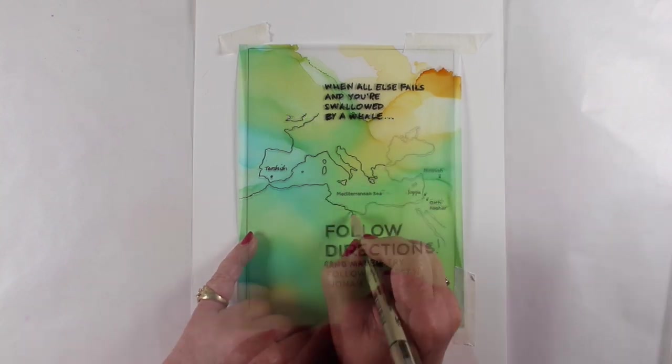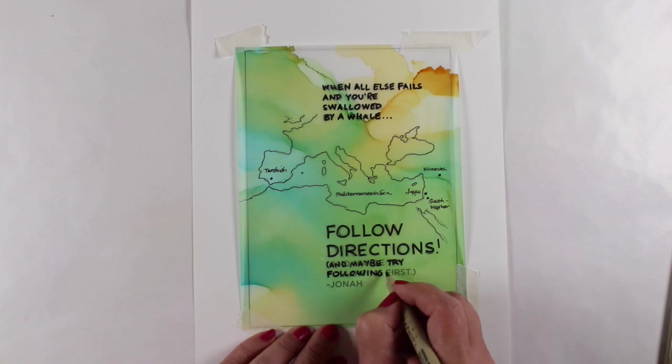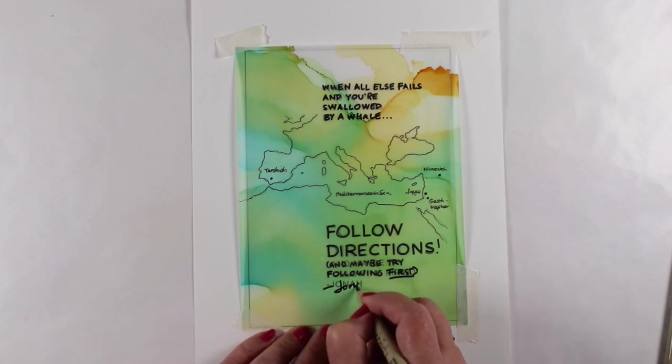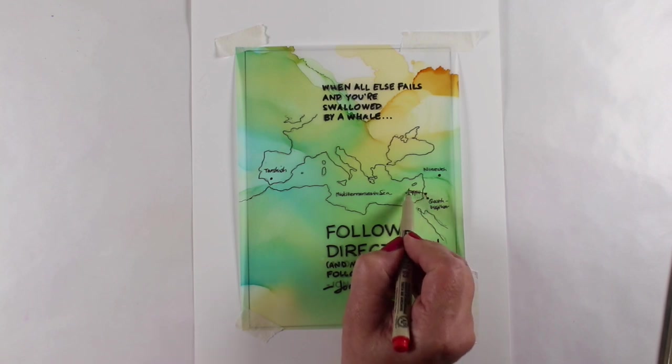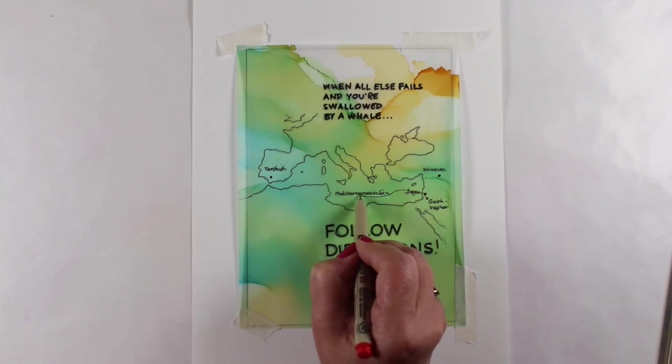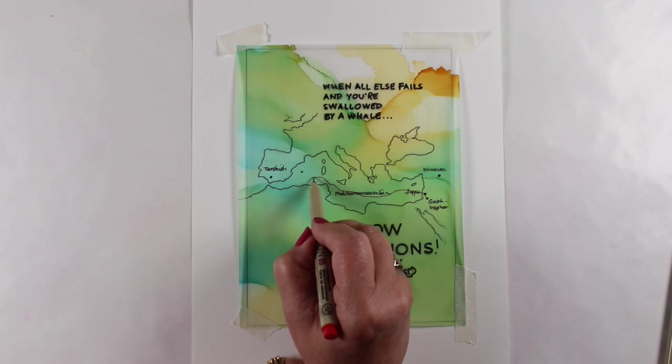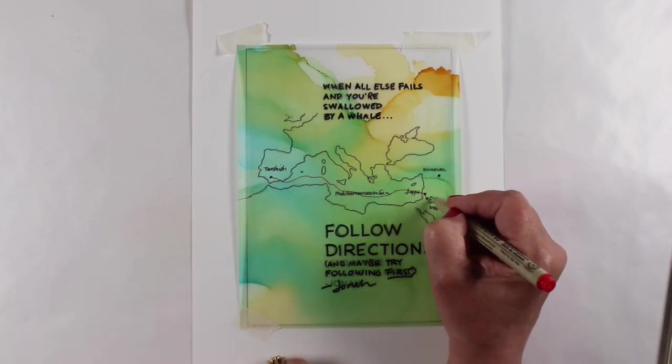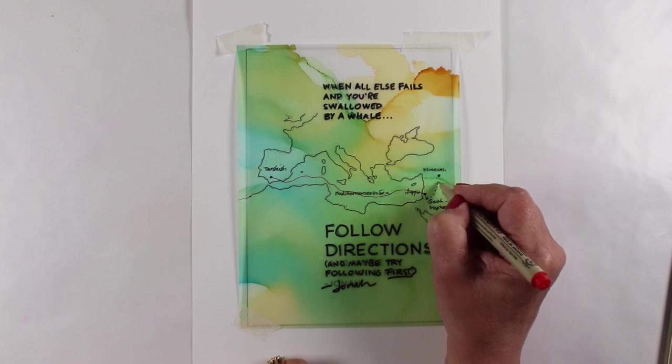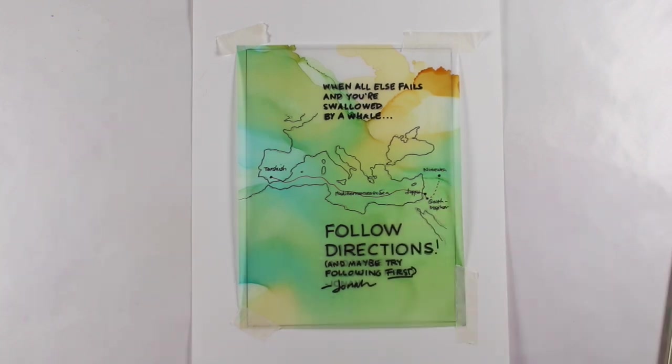And it's basically some words and a map. And it says on it, when all else fails, and you've been swallowed by a whale, follow directions, and maybe follow directions first. Signed, Jonah. And the little dot that I'm drawing my red line to, on the right, all the way over to Tarshish, you see how far that is? This little dotted line is where God told him to go. So he told him, let's just go right over there.